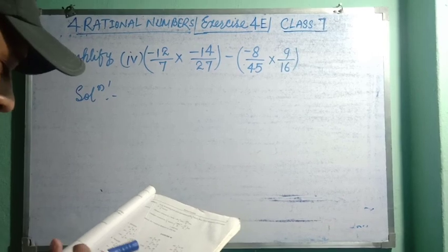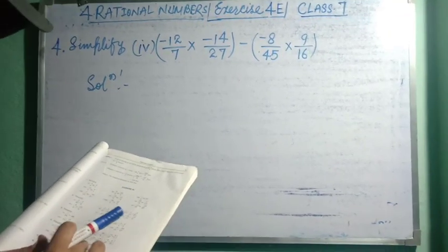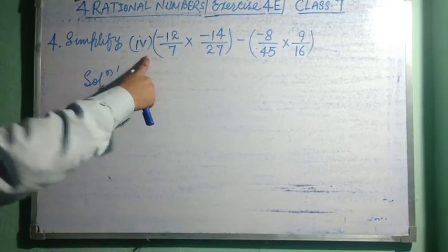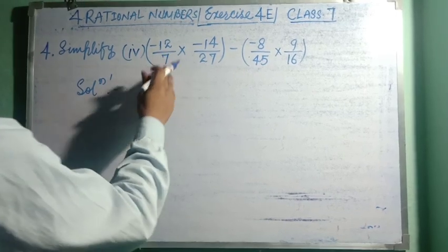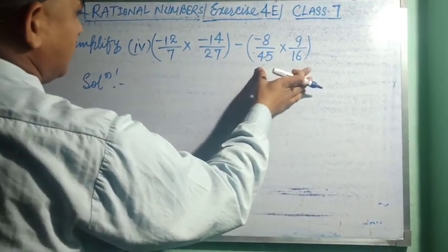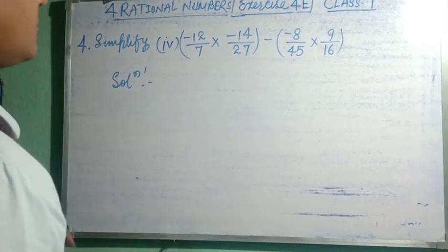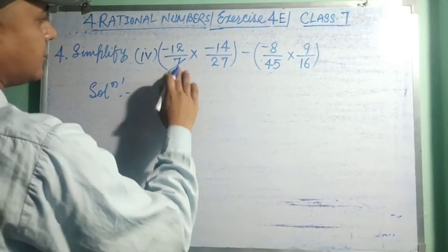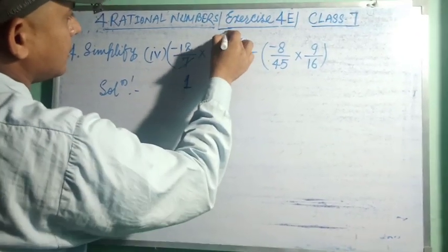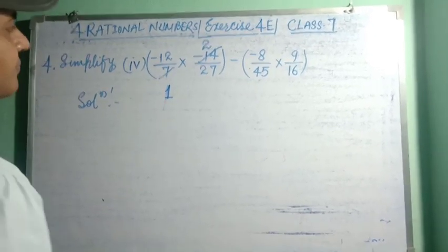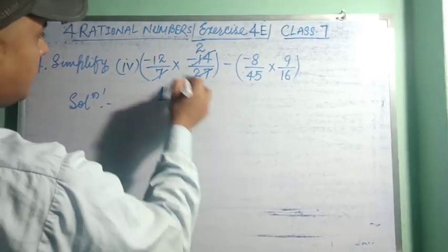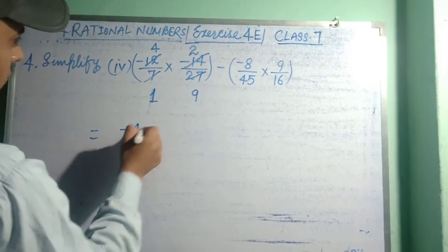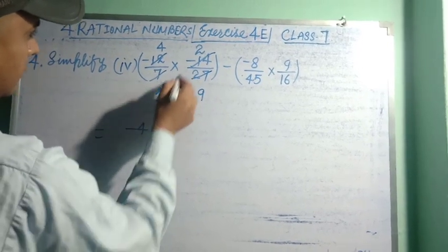Question 4 says simplify — there are four sub-questions and we take sub-question 4. Here is minus 12/7. We solve as usual using the previous method. 3 cancels with 3, 7 goes into 7 once, 7 goes into 14 twice. Then 3 × 9 = 27 and 3 × 4 = 12.